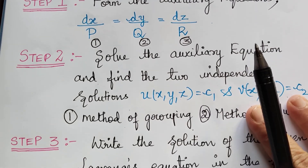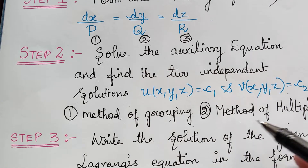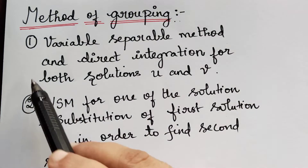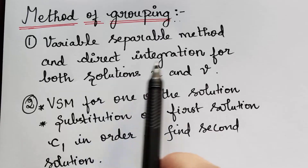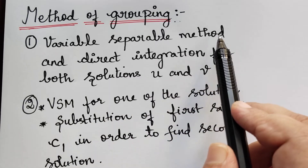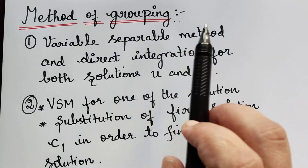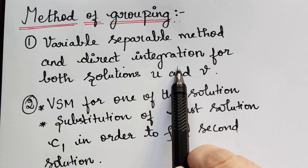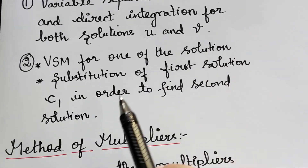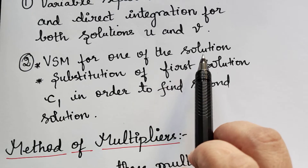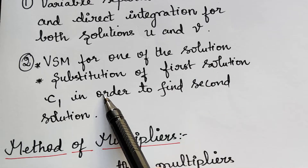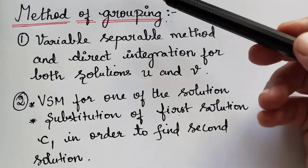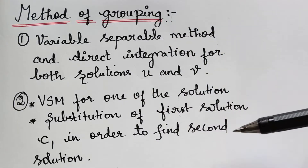While solving the auxiliary equation we have the method of grouping and the method of multipliers. Under method of grouping, we can use two ways: the variable separable method and direct integration for both solutions u and v. We mark the auxiliary equations as 1, 2 and 3 and compare any two to find u and v by direct integration. If that is not successful, we use the variable separable method for one solution and then substitute that result to find the second solution.